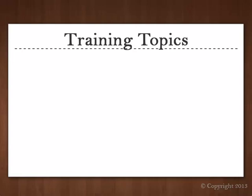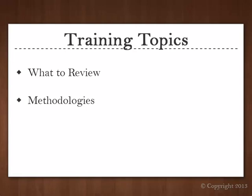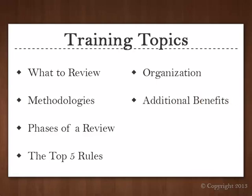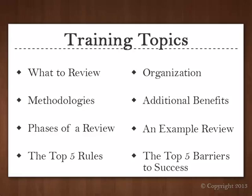We have a lot to cover, so let me lay out the game plan. First, we'll talk briefly about what documents beyond the drawings and specifications we need to include in the review. Next, we'll discuss the two predominant methods of going about a constructability review. We'll also discuss the phases of a review — specifically what we need to focus on and the level of detail at each design milestone. The bulk of this presentation will be an in-depth discussion of the top five rules for an efficient and effective constructability review. We'll then discuss how to organize the review comments, the additional benefits of a constructability review, an example of how I personally organize and present a review, and finally the top five barriers to completing a thorough constructability review.